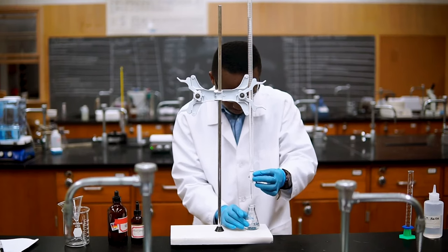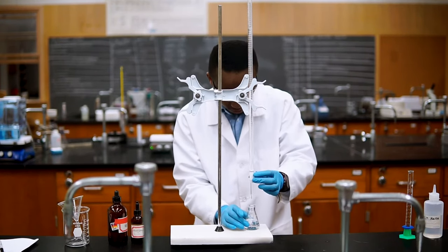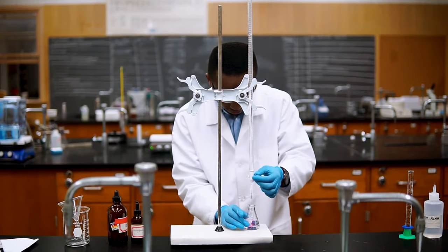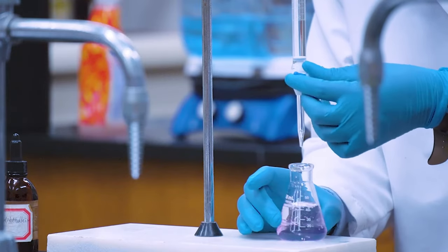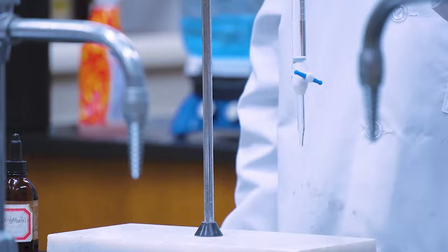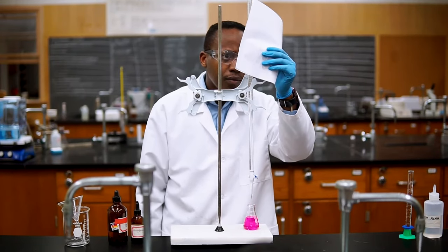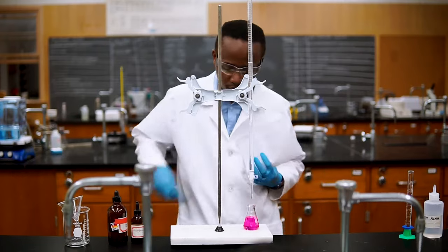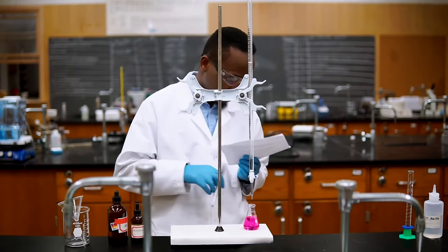To do this, let's open the burette and let the base go down quickly as you swirl the flask, which could also be stirred with a magnetic stir bar if you desire. You'll stop every now and then to check if there's a color change that's persistent. When you see this persistent change, you will know that you have reached the equivalence point. Record the end volume reading on the burette and subtract that from the initial reading to get the volume added. This volume is an estimate of how much it will take to reach the equivalence point.